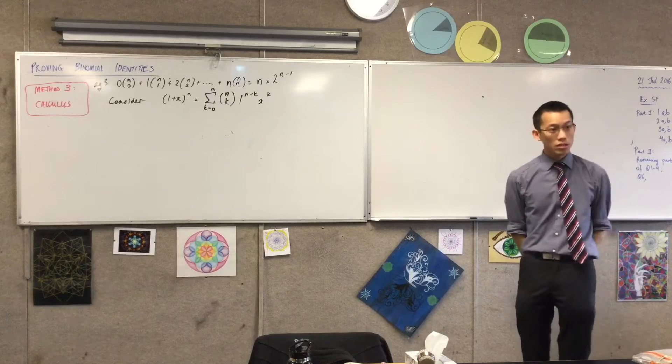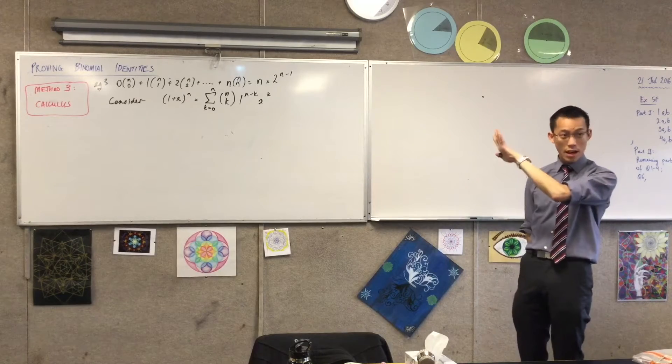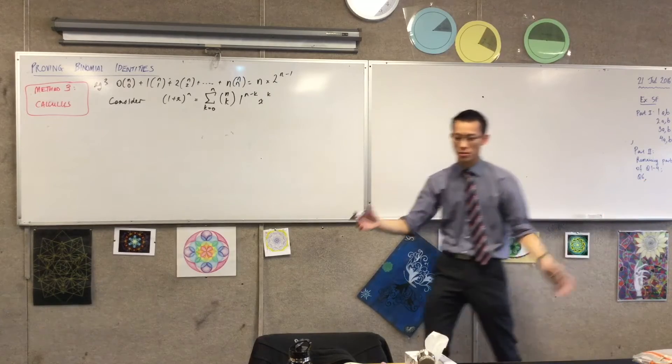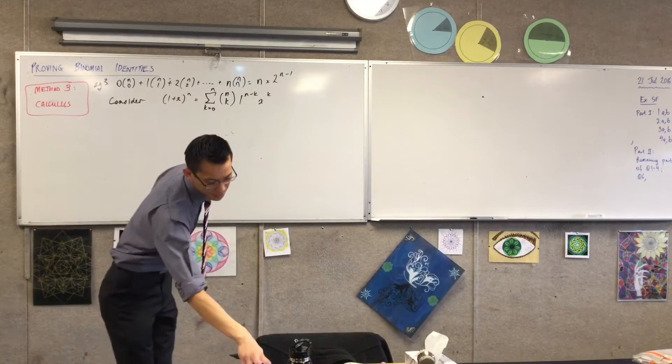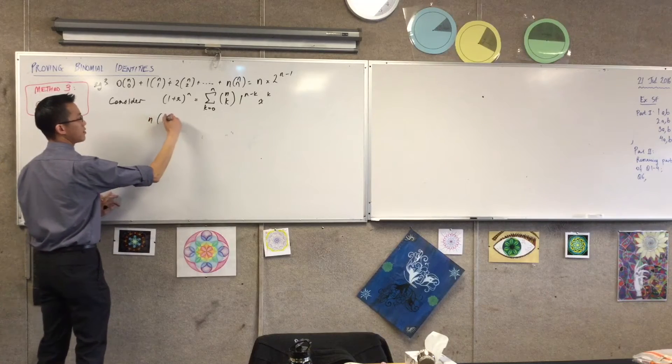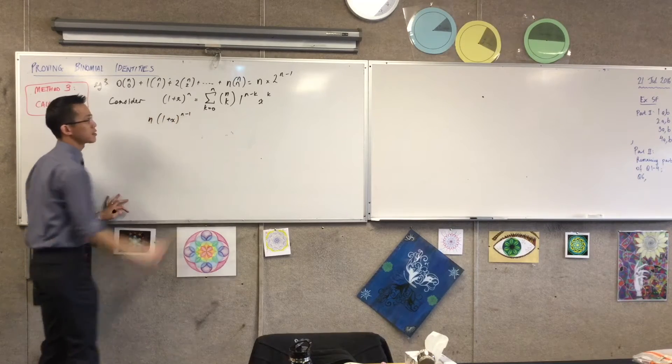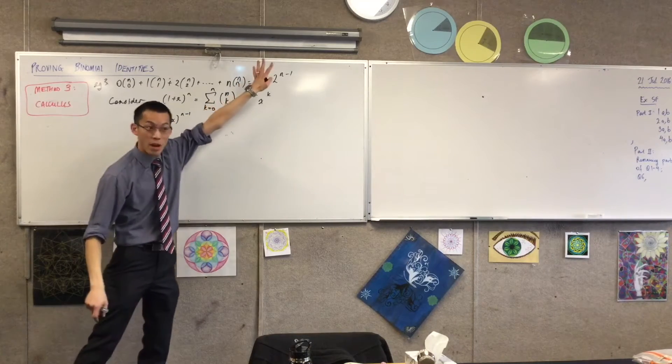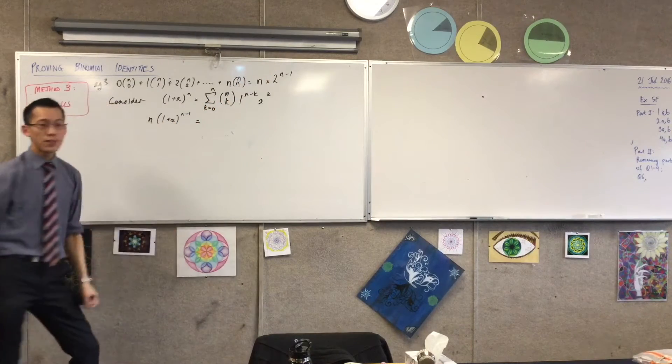So what I'm going to do is consider this line and differentiate both sides. If I do that, what am I going to get on the left? I'm going to have n times 1 plus x to the n minus 1. That looks helpful, right? You see my n and my n minus 1 in the right spots.